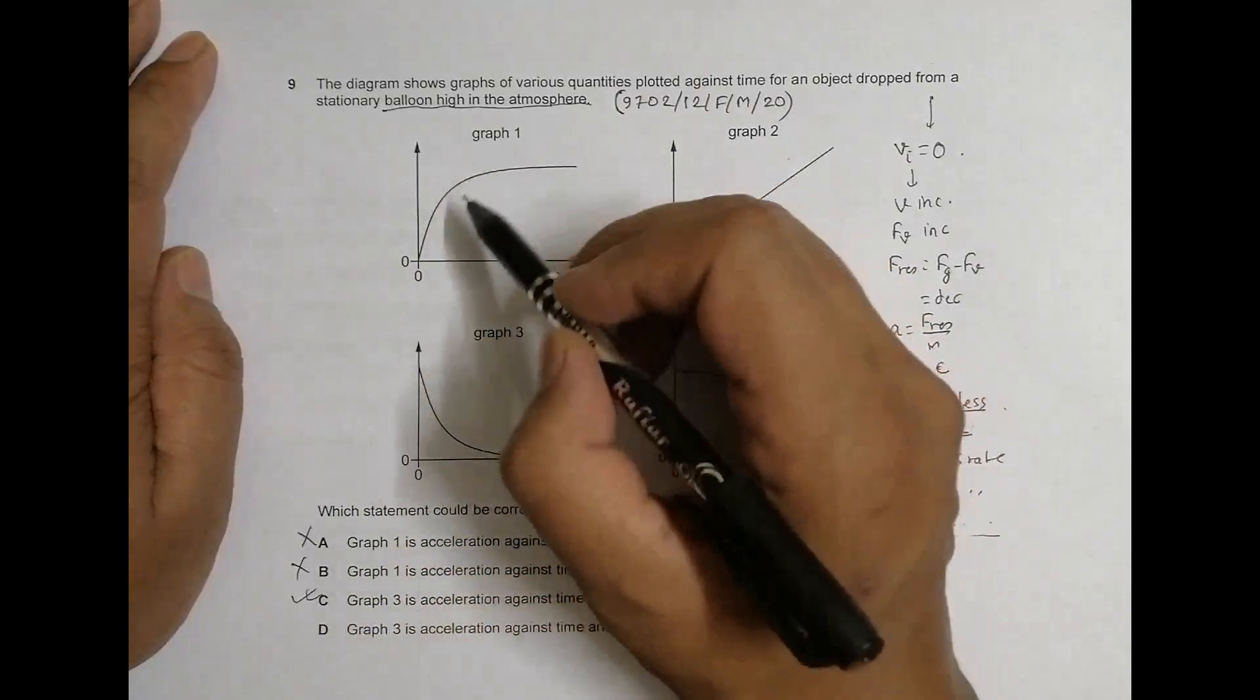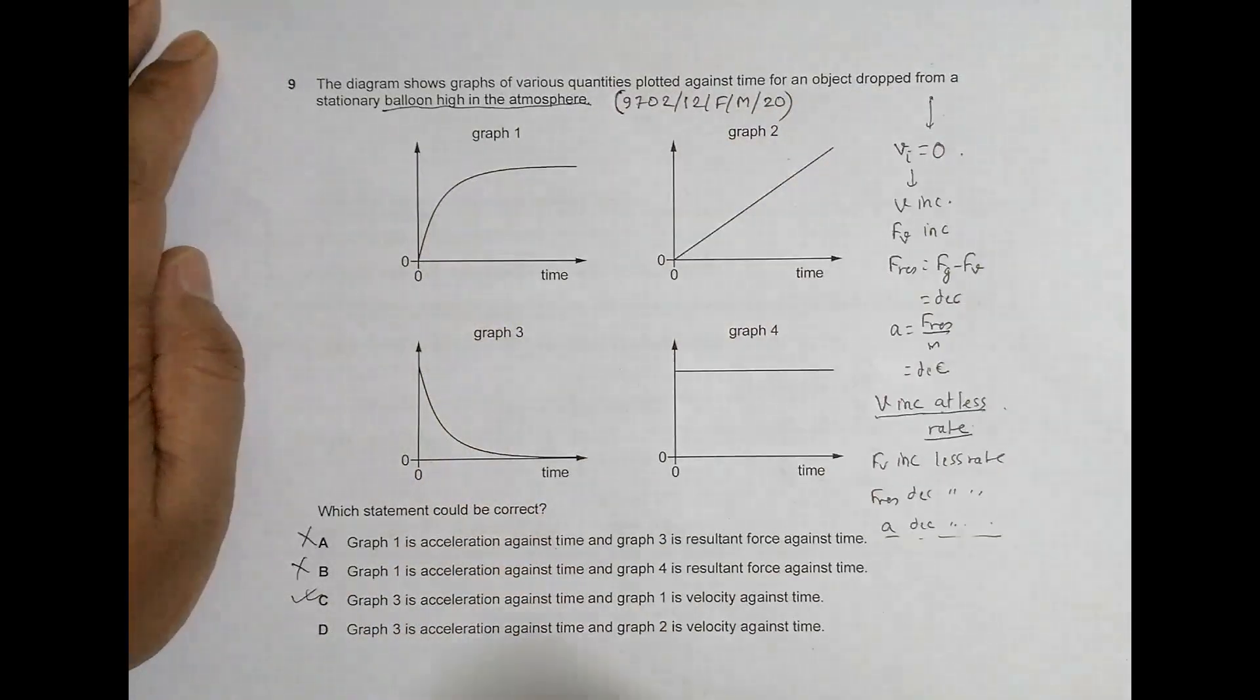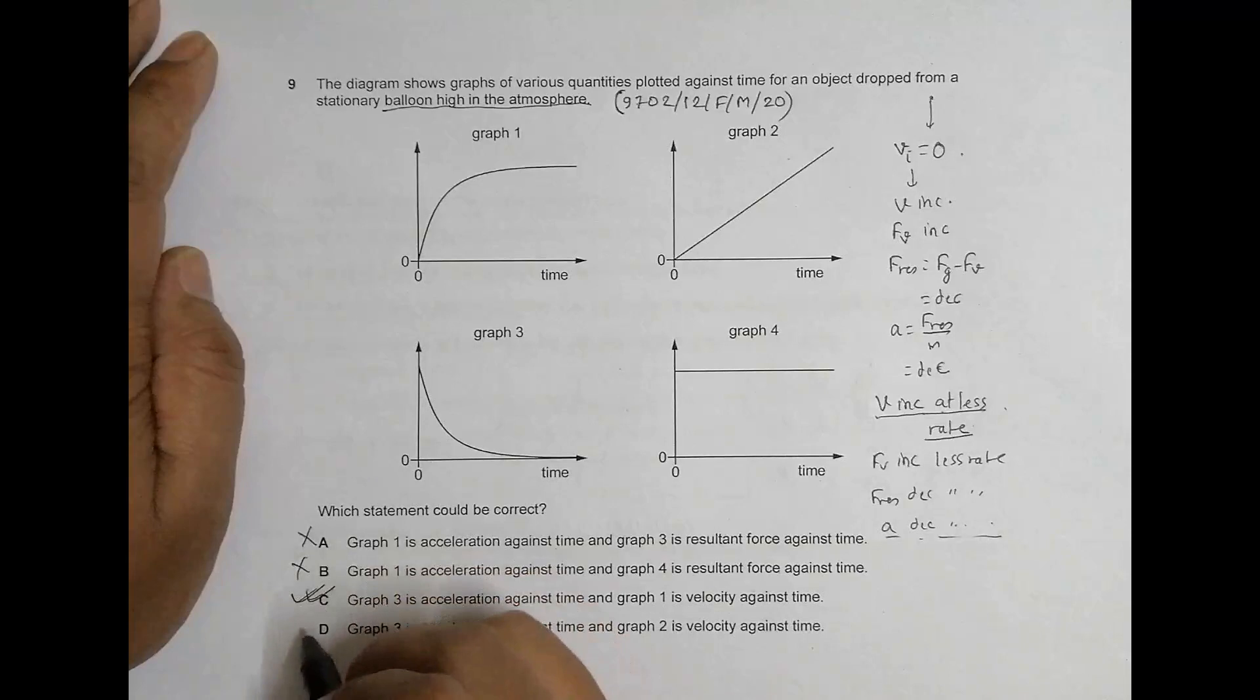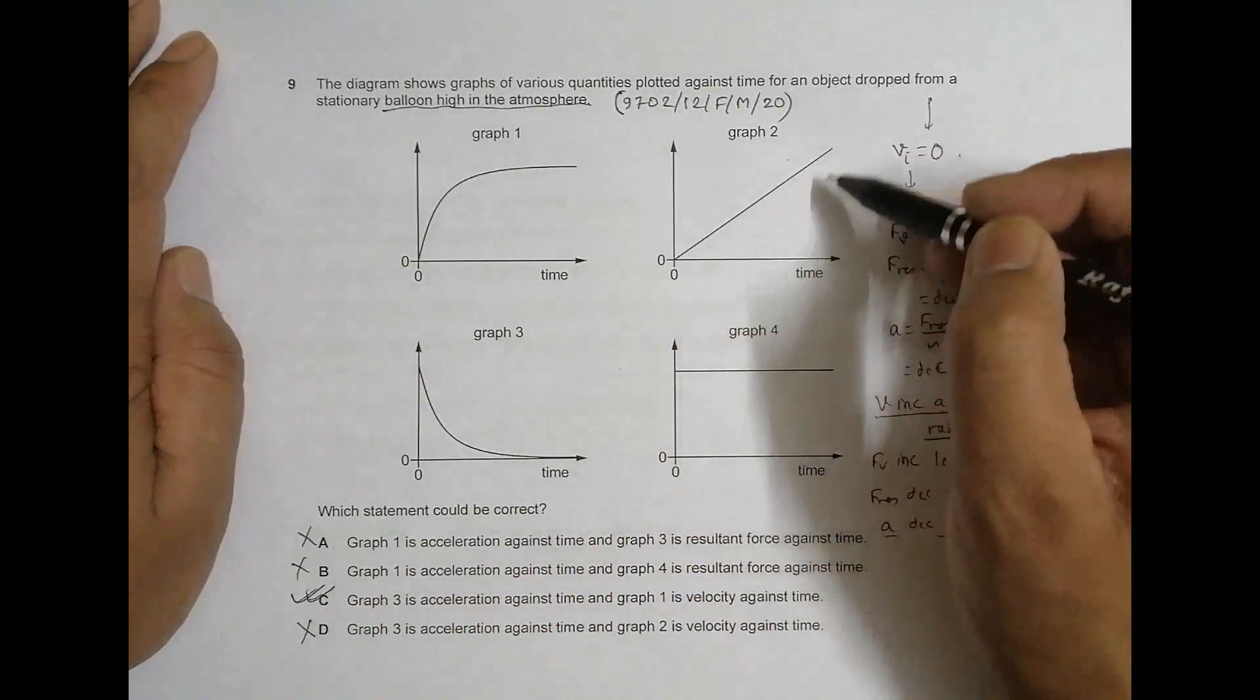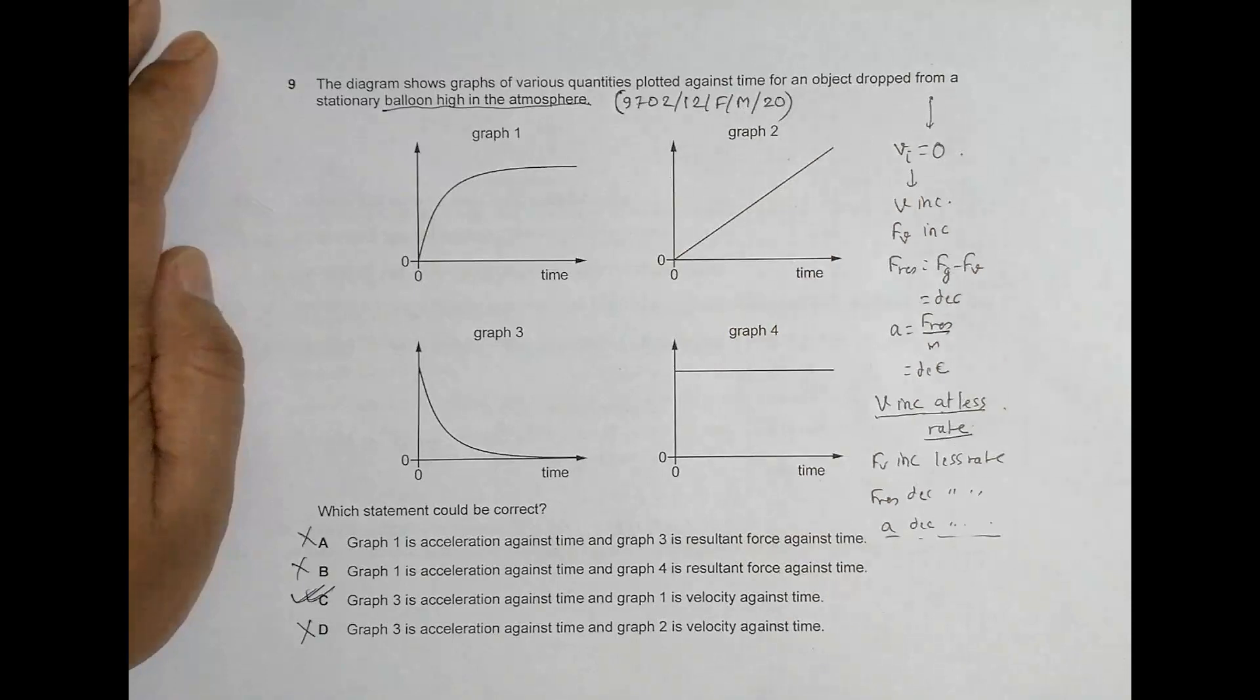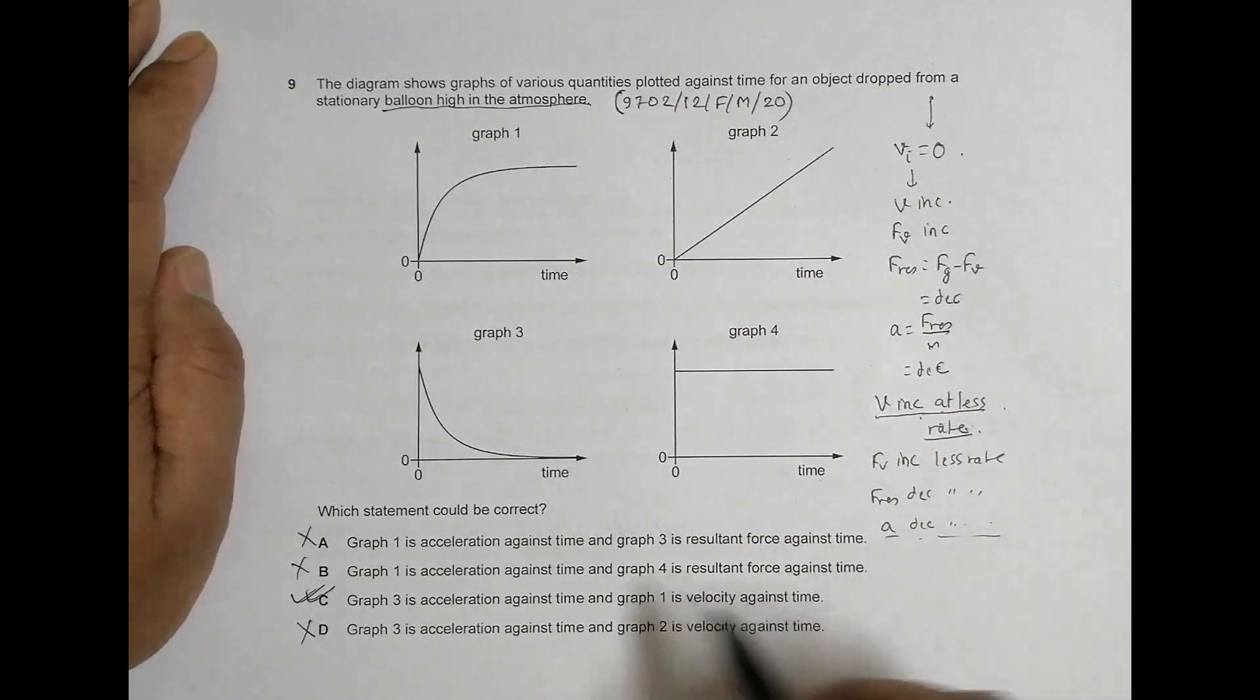Only in graph 1 we have v increasing at lesser and lesser rate. So a decreasing at lesser rate and v increasing at lesser rate is only in graph 1 and 3. So that's why choice C is the correct choice and D again becomes incorrect choice. So D nearly qualified, but ultimately this graph 2 failed it because it shows v increasing uniformly, whereas v increases but at lesser rates.